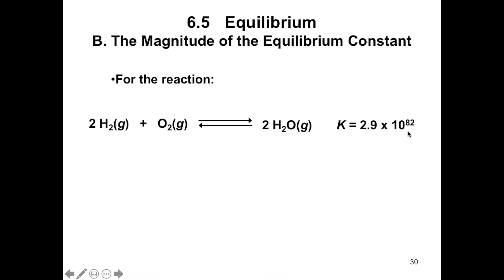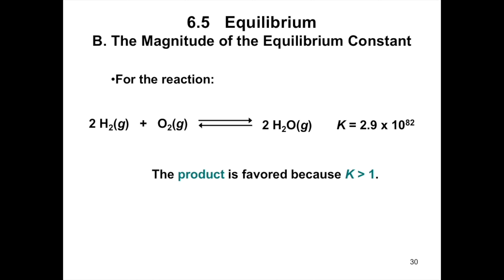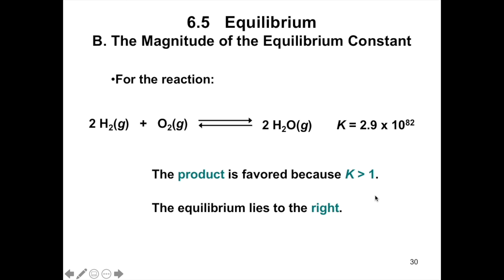For example, the equilibrium constant for the reaction of hydrogen and oxygen to form water is much greater than 1, so the product water is highly favored at equilibrium. A reaction with such a large K essentially goes to completion with little to no reactants left. Based on this reaction, the product is favored because K is greater than 1, therefore the equilibrium lies to the right.